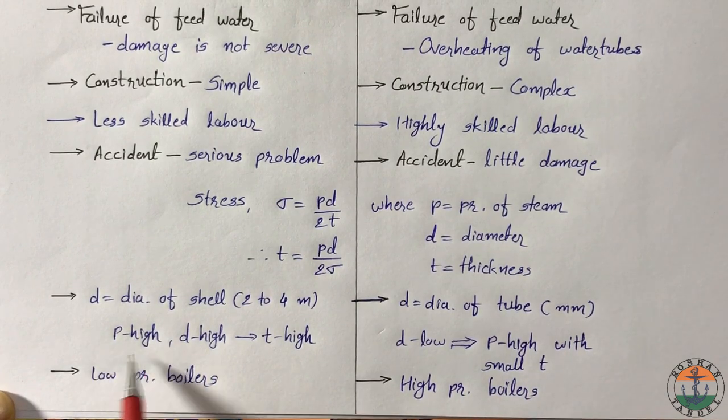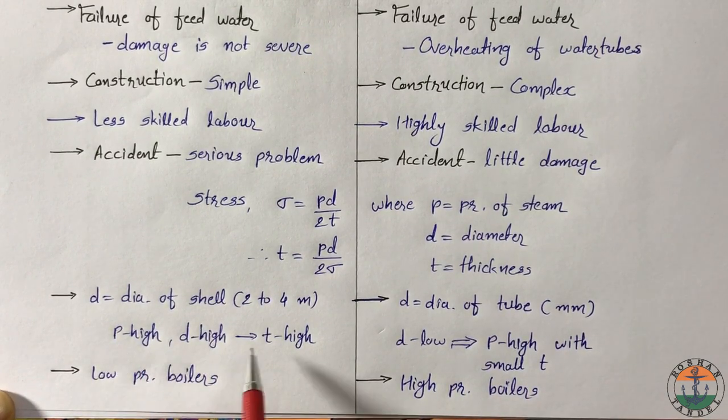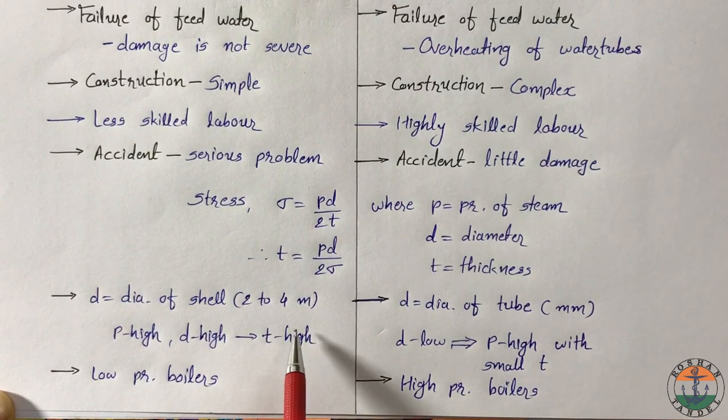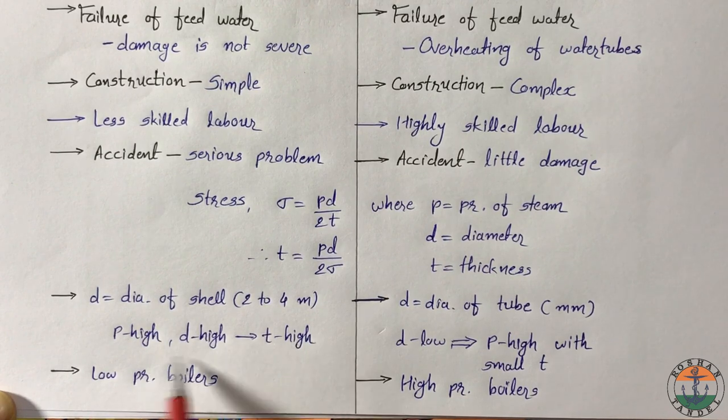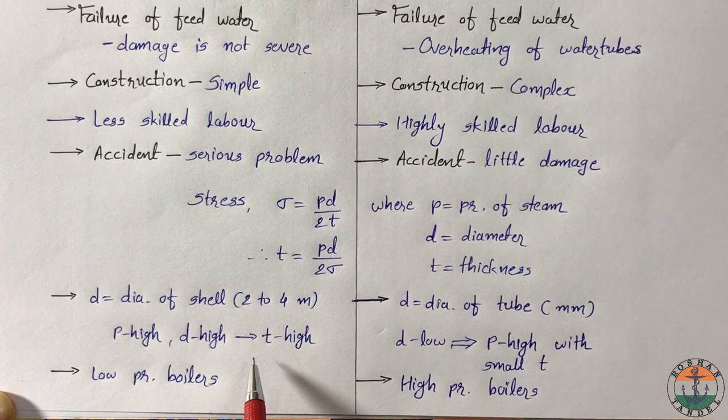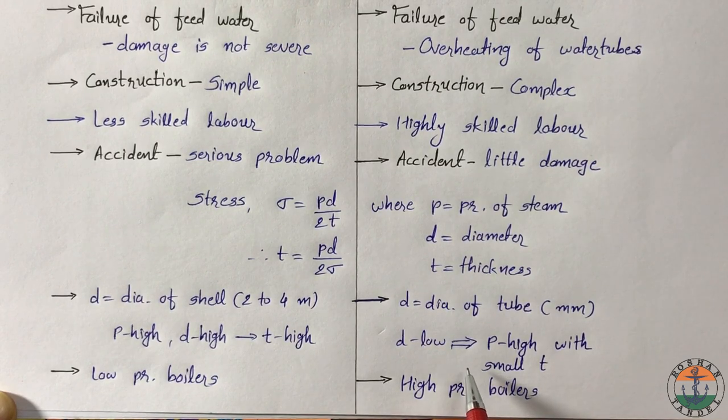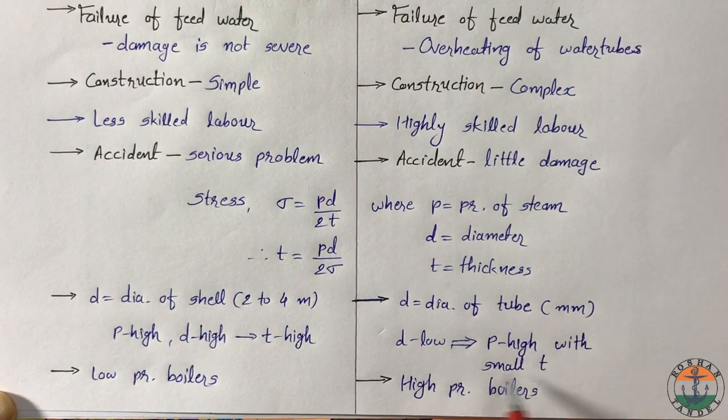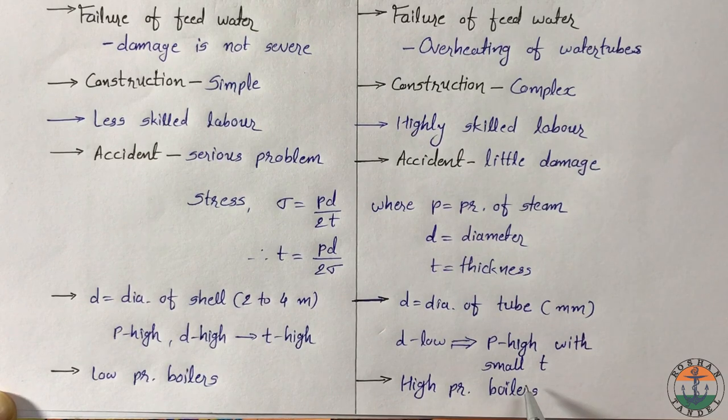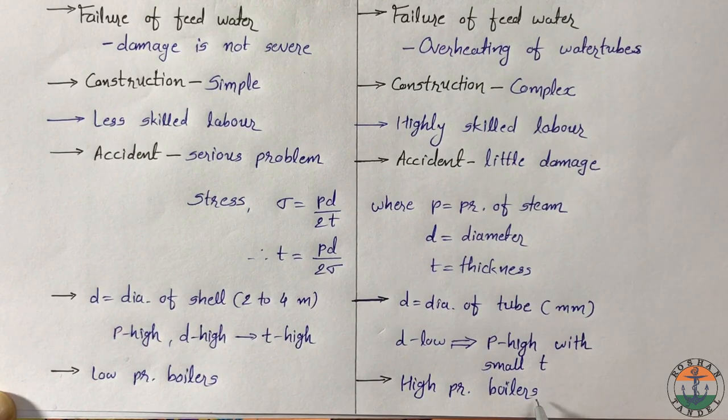To achieve high pressure, its thickness should be increased to extreme level, which is a constraint. So generally fire tube boilers are low pressure boilers. Here high pressure is achieved with some thickness range. So generally water tube boilers are high pressure boilers and they are mainly used for large power plants.